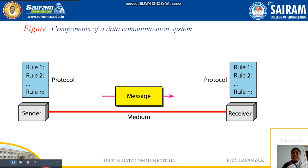The next one is receiver. The receiver is nothing but the destination. Whatever the sender sends — information, data, or signals — that is going to be received at the destination. Receiving data from the sender is the job of the receiver.